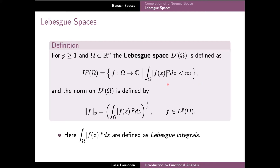In short, we sometimes say that functions satisfying this condition are P-integrable. By definition, the P-norm defined here is well-defined and finite for all functions in the space LP. With this norm, the space LP becomes a normed space which is actually complete, and thus is a Banach space.